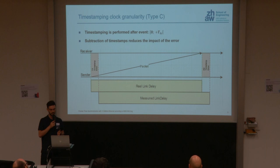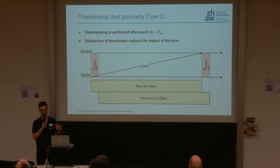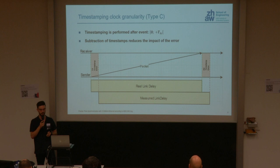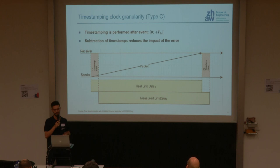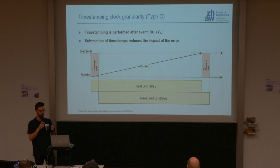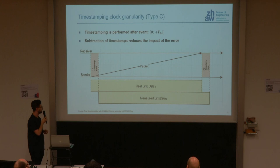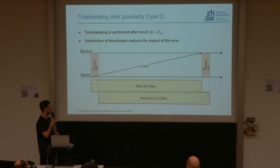The first effect is related to timestamp clock granularity — a Type C error. When you take a timestamp, you always capture it after the event occurs, adding an error between zero and the period of the timestamping clock. A faster clock means less error per timestamp, but this effect is always present regardless of the PHY or MAC-PHY interface chosen. Since the protocol calculates time intervals by subtracting timestamps, errors can sometimes cancel — for example, if sending and receiving timestamps have similar errors, the measured link delay may still match the real delay.